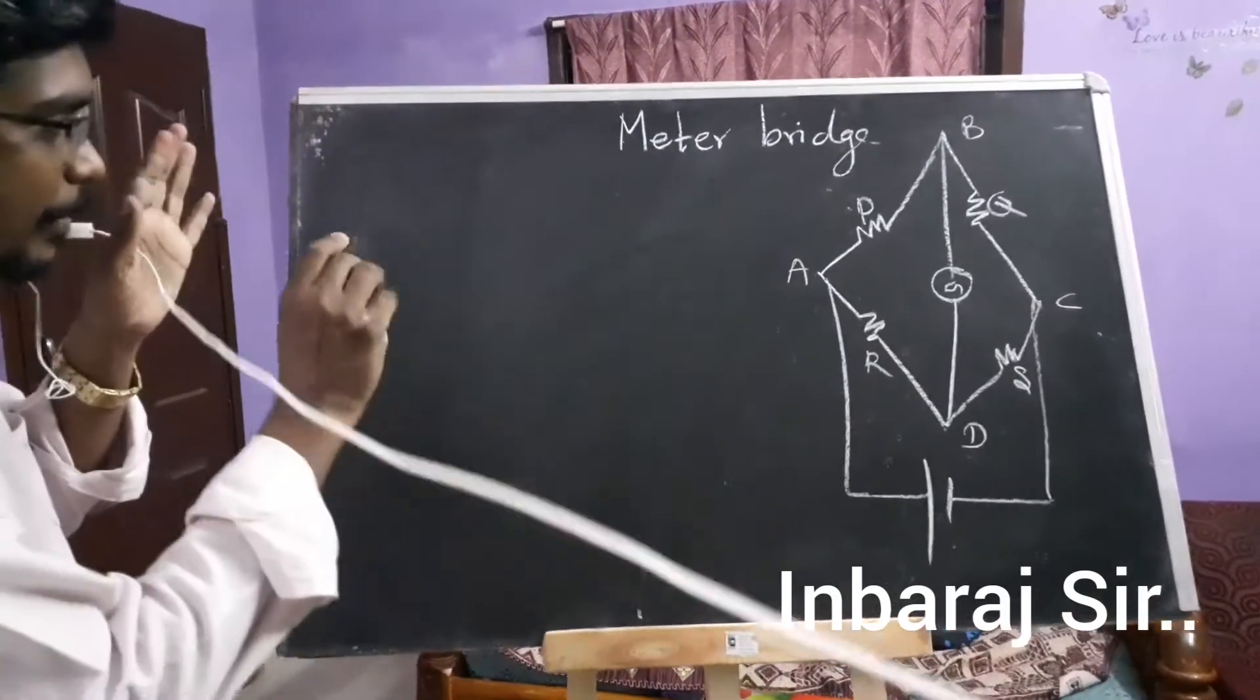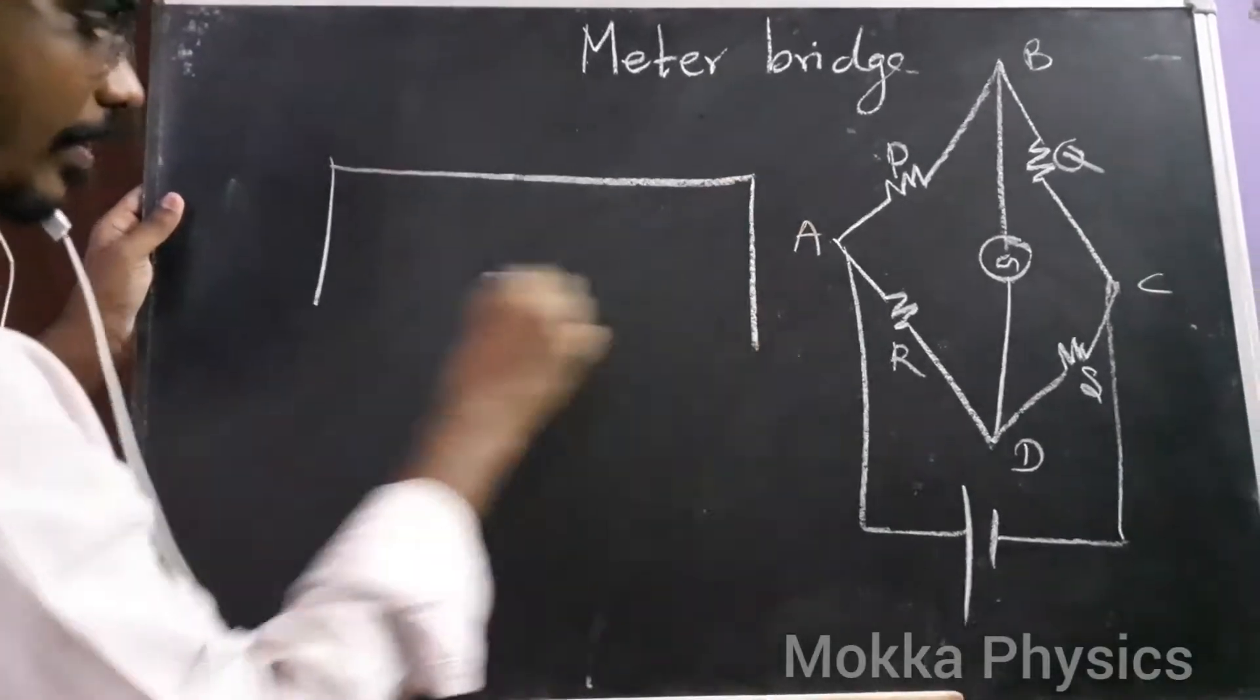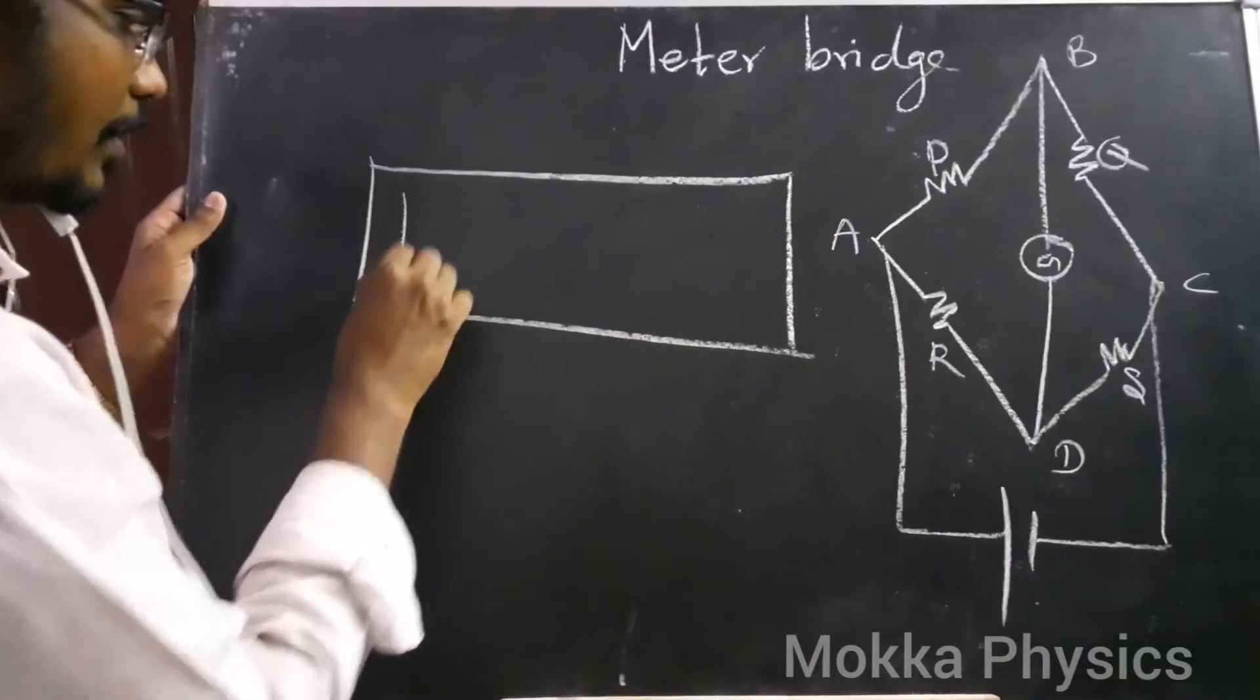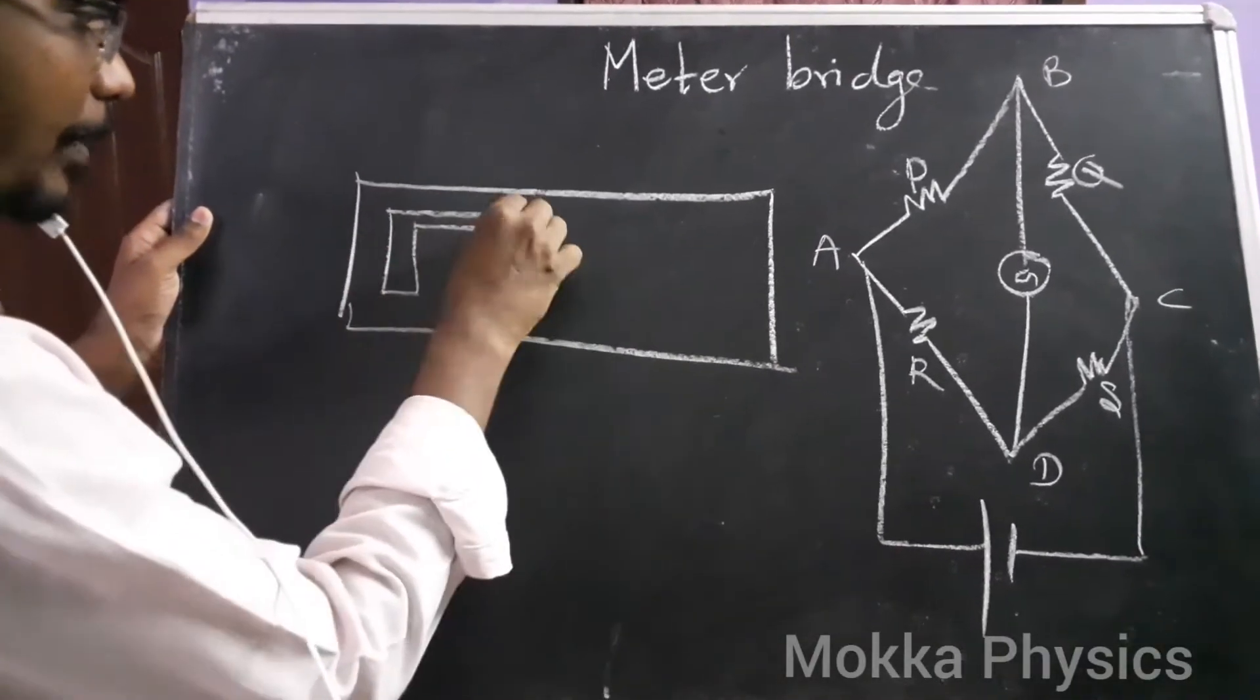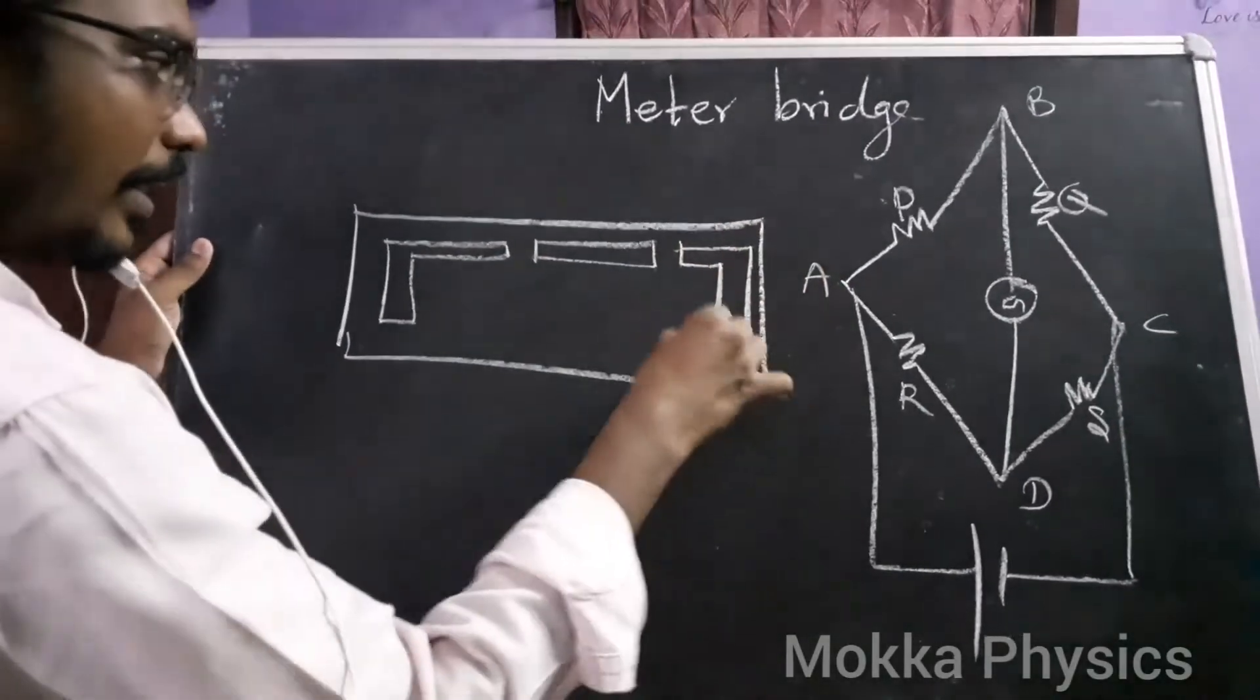How do we construct the meter bridge? It is just a wooden board. How do we construct these copper strips? There are continuous strips with two gaps.